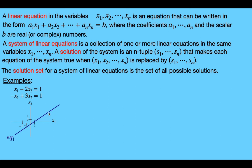Any pair of numbers that doesn't lie on this line — whether it's a point over here or some other point — won't satisfy this first equation. So the only possible solutions for the first equation are points that are on this line.